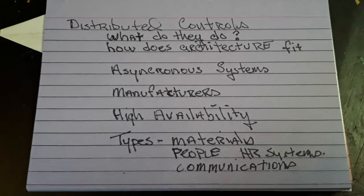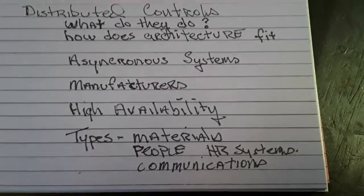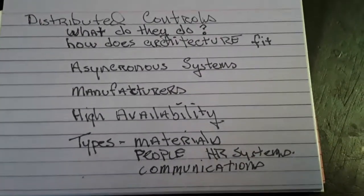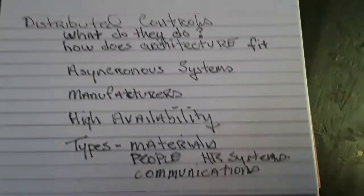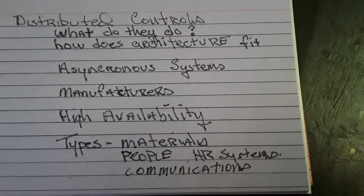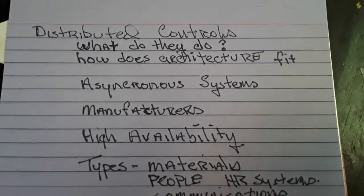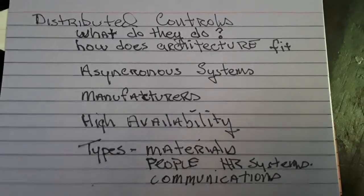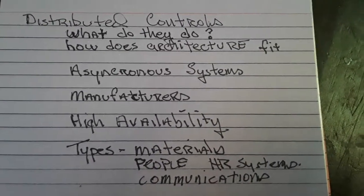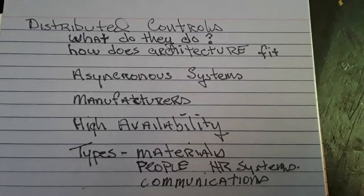Distributed controls of communications — that's another interesting one. There are a lot of other types of distributed controls, minor and major. Some of them are subsets of huge projects, but these are ongoing operations items — the cost of running something. There's Jerome's work, suggested readings.